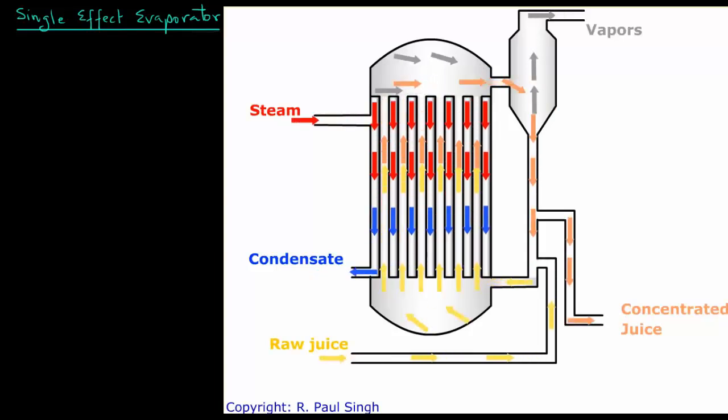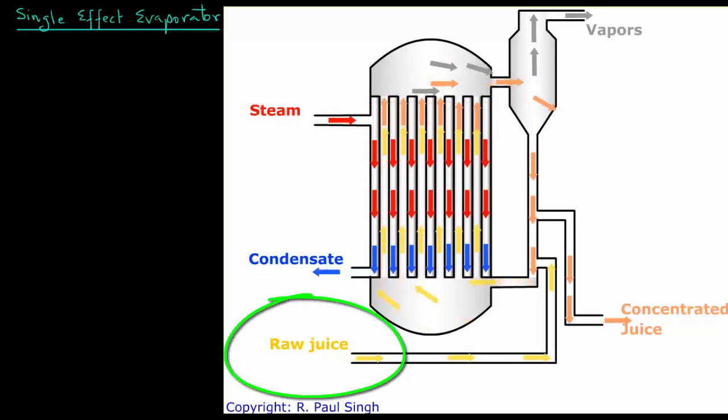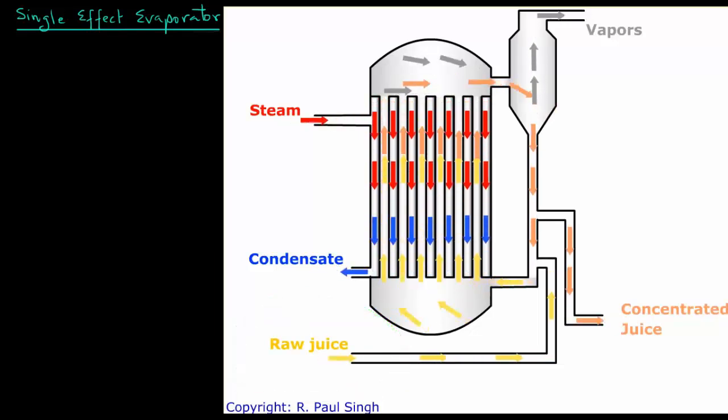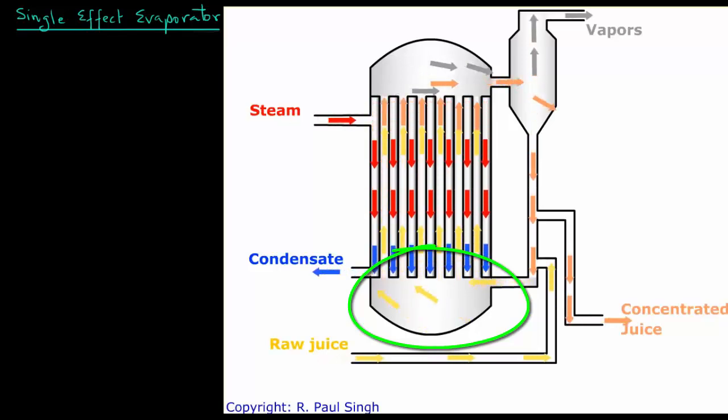We have juice coming in at the bottom as shown with these yellow arrows. The incoming feed, that is the raw juice, then enters at the bottom of the tubes and rises to the top.